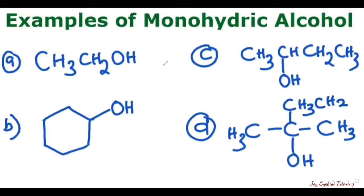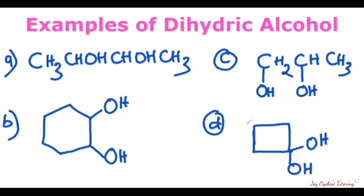Let's look at some examples. For the monohydric alcohols, each of these compounds has just one OH group — one OH group in each. These are all monohydric alcohols. For the dihydric alcohols, you can see one OH and another one — two of them. Each of these compounds clearly has two different OH groups present, which makes them dihydric alcohols.